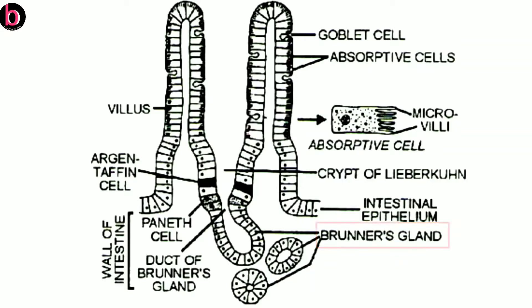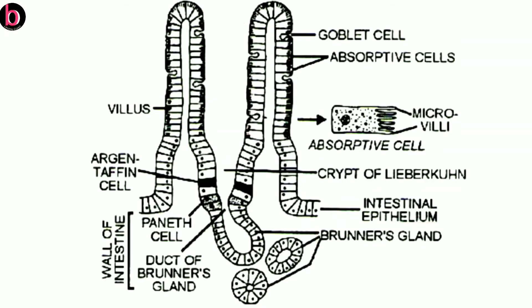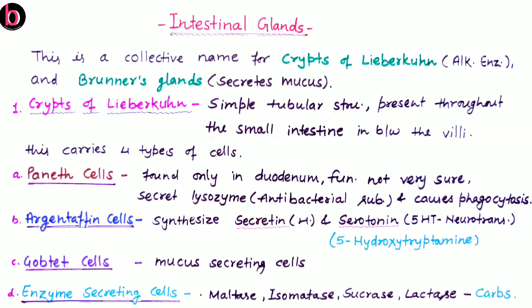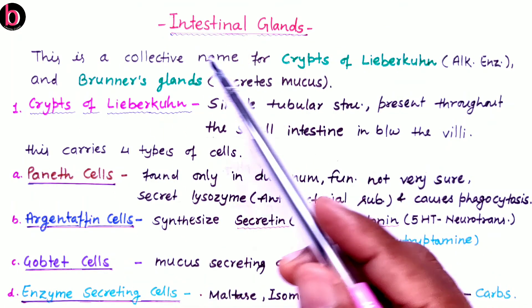Brunner's gland secretes mucus along with a number of salts. The overall secretion of the intestinal gland is called intestinal juice, or succus entericus. Nearly two to three liters of succus entericus are secreted per day in an adult body, and it is alkaline in nature with a pH of approximately 7.8.